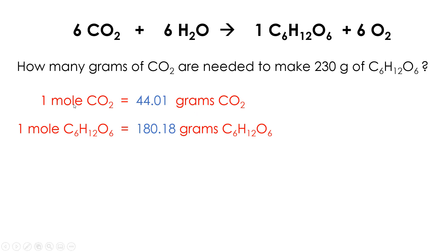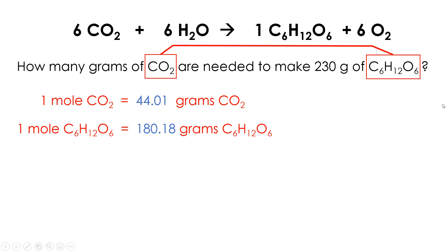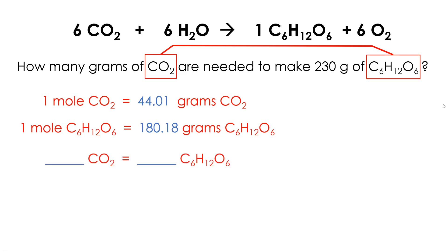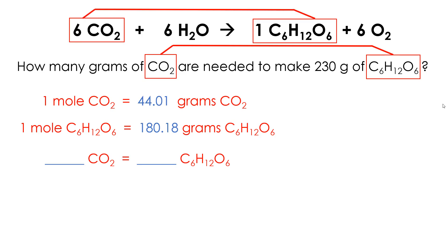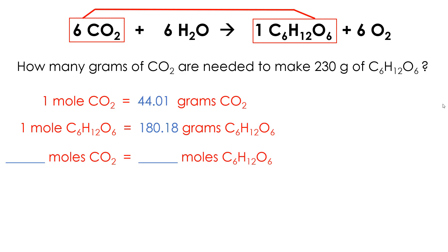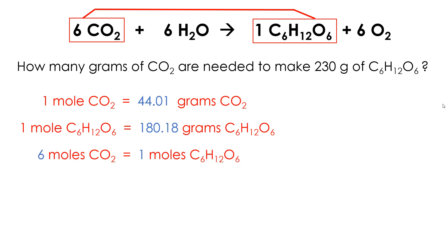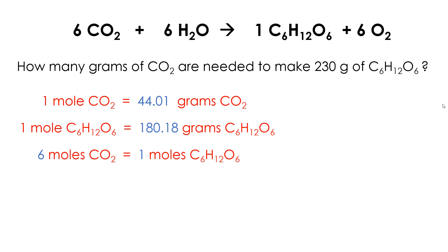Notice that I have a fact about moles and grams of carbon dioxide, and a fact about moles and grams of glucose, but I don't have the connection between them that I need to do this conversion. So the last fact I need comes from the chemical equation — it's a connection between the two chemicals. Specifically, it gives me facts about the moles of the chemicals, not grams. I take the coefficients directly from the equation, and six moles of carbon dioxide is equivalent to one mole of sugar.